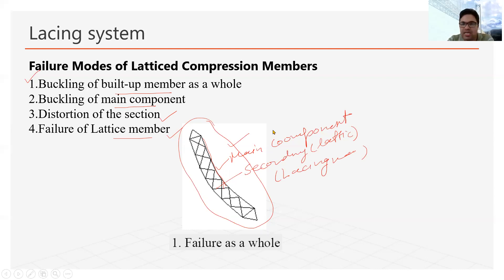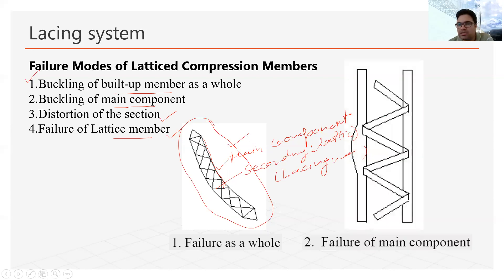In the second failure case, the lacing members and secondary members are not failing, but one of the main members is buckling. In a built-up column, these two main chords carry the main load, but in this failure mode one of those members buckles individually — this is the second kind of failure that may occur in a built-up section.